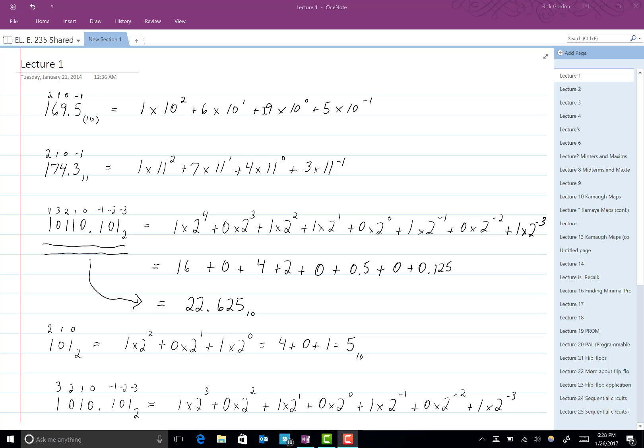Plus 9 times 10 raised to the 0, and then plus 5, the next number, times the base 10 raised to the negative 1 power, as we see here. There are no other numbers, so we stop at that point. That's how we expand this number and understand exactly what we mean when we write 169.5 base 10.